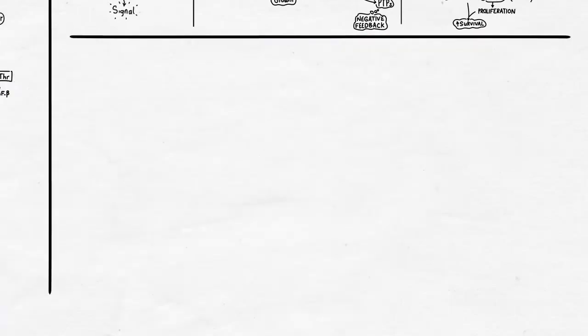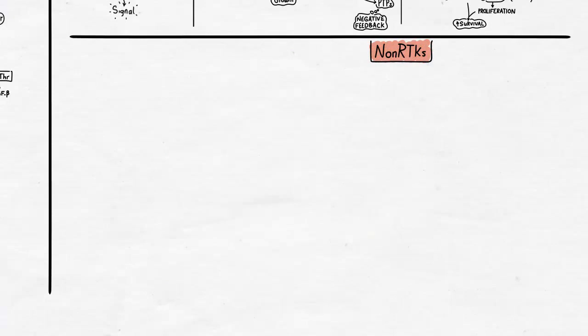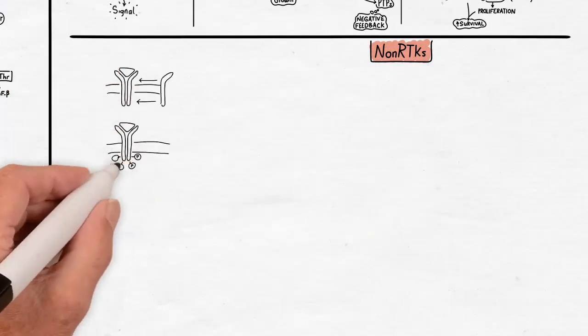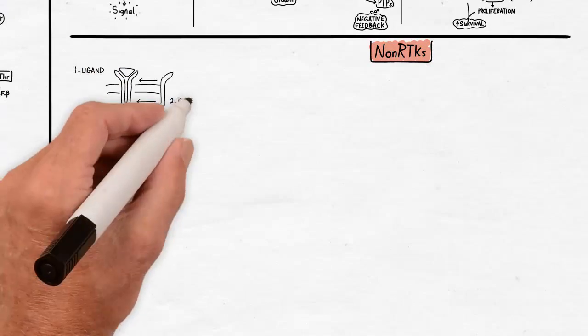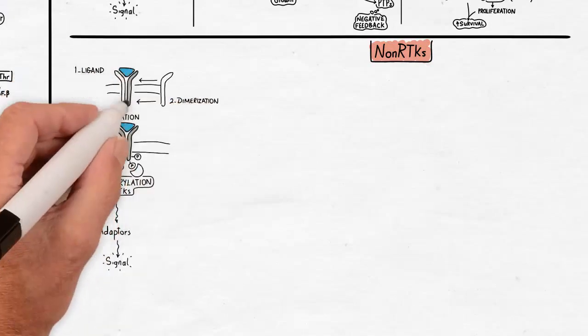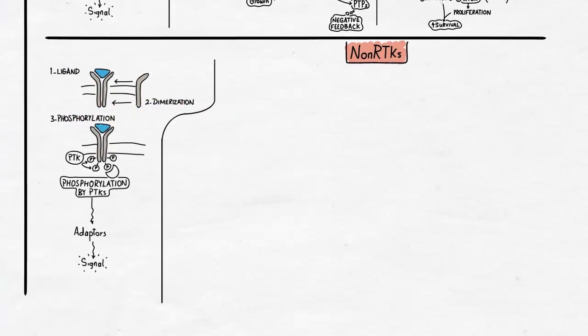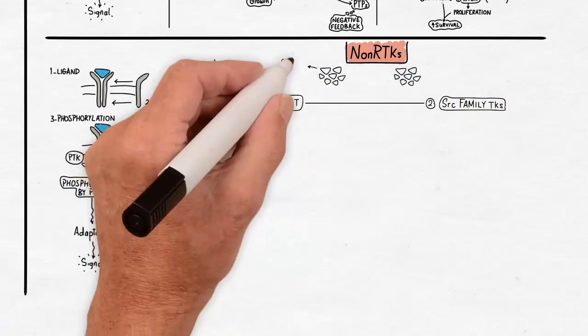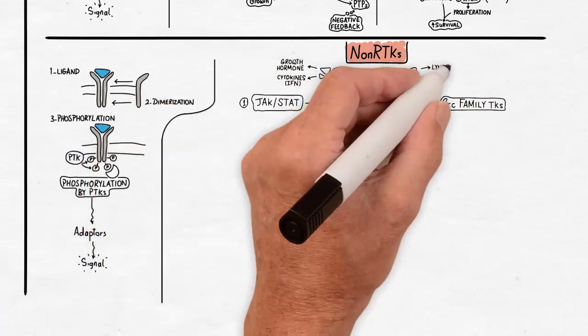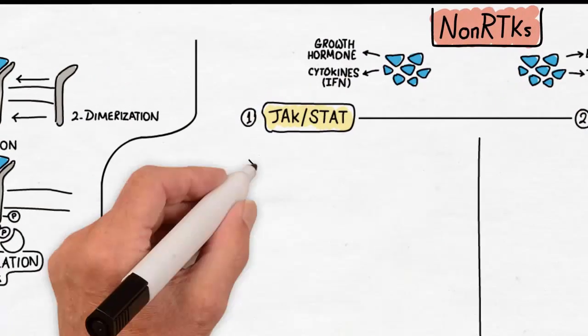The non-RTK signaling involves a receptor that lacks tyrosine kinase activity and gets phosphorylated by the help of a separate protein tyrosine kinase. The two major types of non-RTKs are the JAK-STAT signaling, which mediates the action of growth hormone and many cytokines, and the SRC family tyrosine kinases, which mediate signaling of integrins and lymphocyte receptors.